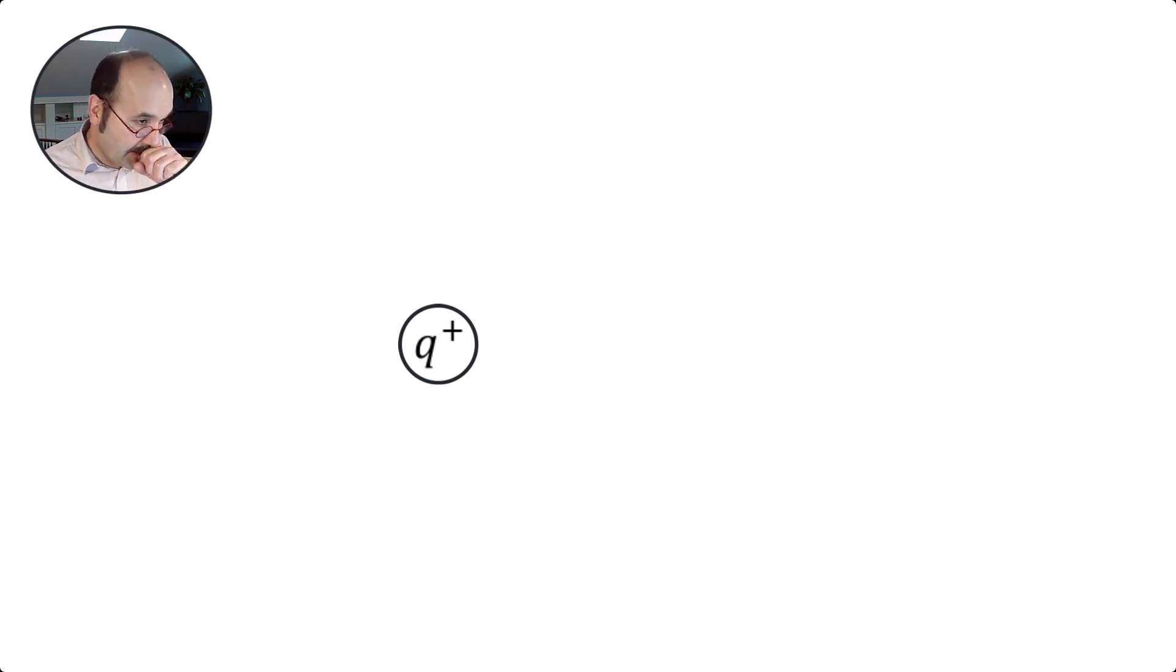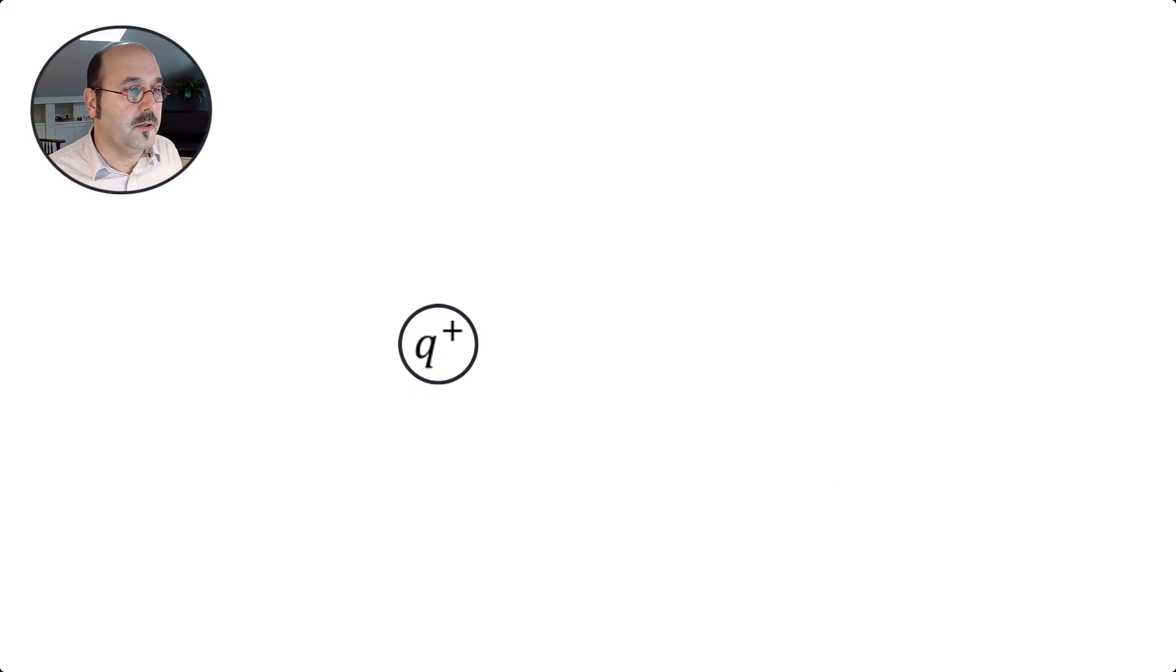One of the models that we use for this is a field model. What we can say is, given a single point charge that has a value of Q, the fields emanating from that charge are basically radially directed. These lines are representing what's called the electric field due to this point charge.